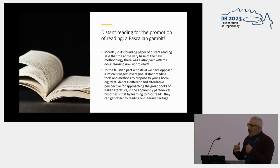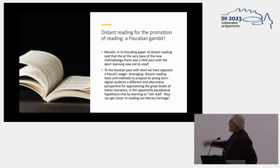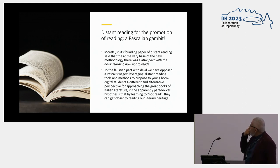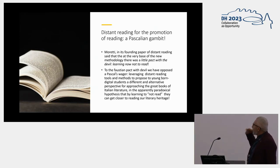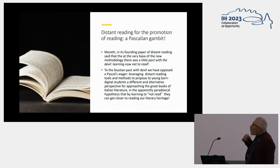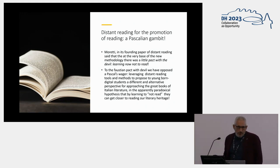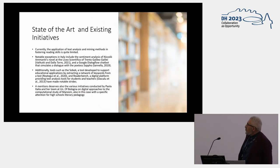The idea is that at the end of the game, you may want to actually read the book you've been playing with. Moretti's founding paper on distance reading said we have to make a pact with the devil by learning how not to read. We are sort of reversing that idea — making a Pascalian gambit: using distance reading tools and other computational approaches to test the paradox that by learning how not to read, you can get closer to reading literary heritage, especially for younger generations who are reading less and less.